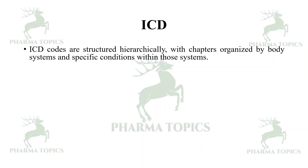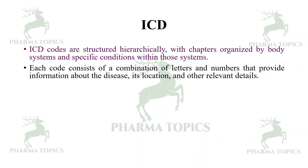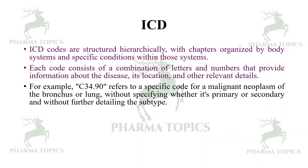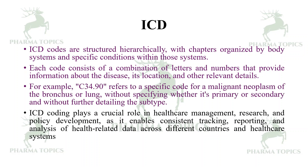ICD codes are structured hierarchically, with chapters organized by body systems and specific conditions within those systems. Each code consists of a combination of letters and numbers that provide information about the disease, its location, and other relevant details. For example, C34.90 refers to the specific code for malignant neoplasm of the bronchus of the lung. ICD coding plays a crucial role in healthcare management, research, and policy development, enabling consistent tracking, reporting, and analysis of health-related data across different countries.